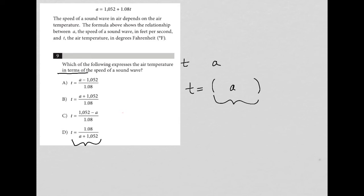So what we have right now, and I'll erase these for right now, the equation that we're starting off with is the one that's given. So we have A equals 1052 plus 1.08T. And again, we want our answer to look like the answer choices, which basically is just telling us to isolate T.